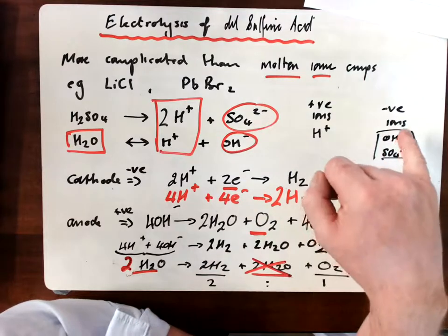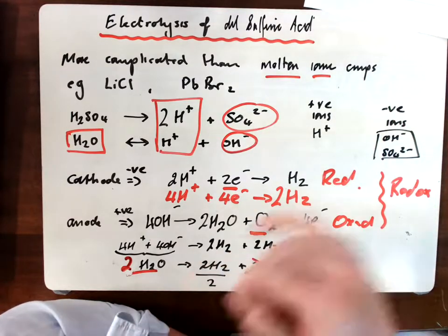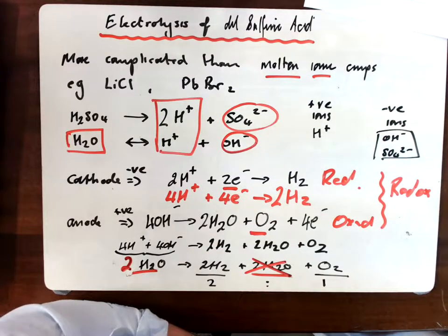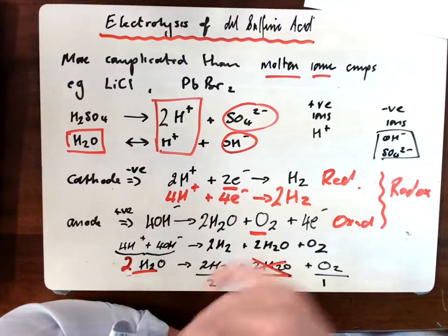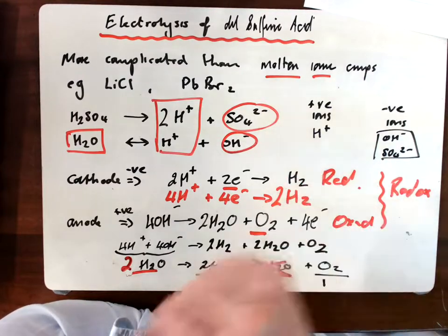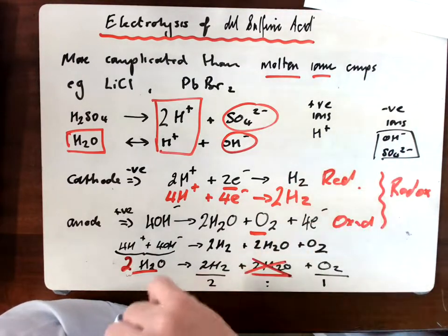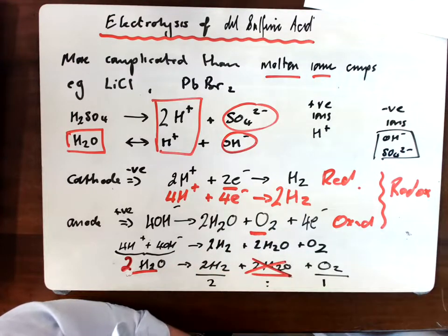Whereas the rule at the anode is slightly different in that if I have a halide present, the halide gets displaced. So if I have chlorine, bromine, iodine, they will get displaced. Whereas if I have a sulfate or a nitrate, they're very very stable and it's the hydroxide which gets displaced, forming oxygen instead.